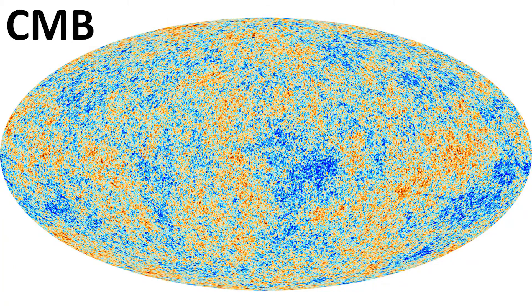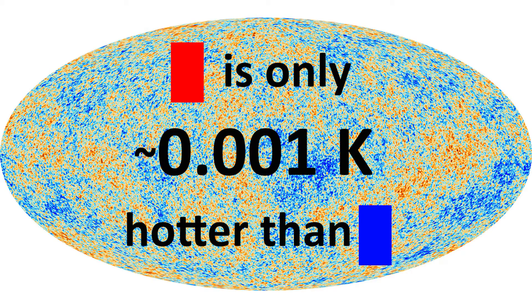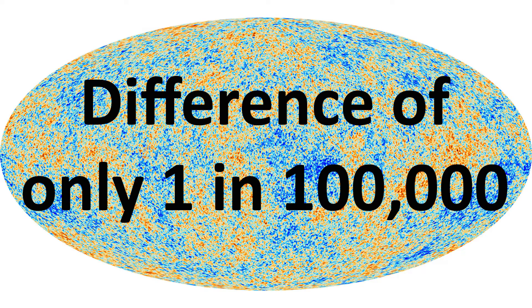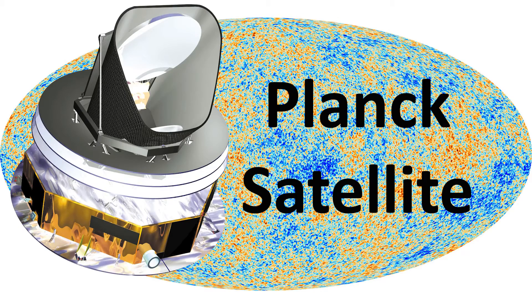A temperature map of the whole CMB looks like this, where the redder spots denote hotter points and the bluer spots denote colder points. Don't be fooled though — the differences between the temperatures of these different spots are absolutely tiny. The hottest red spots are only about 0.001 Kelvin hotter than the coldest blue spots. That's a difference of less than 1 in 10 to the power of 5, or 100,000. In reality, the CMB is almost a perfectly uniform temperature, and it took an incredibly sensitive satellite, the Planck satellite, to measure the fluctuations shown here.